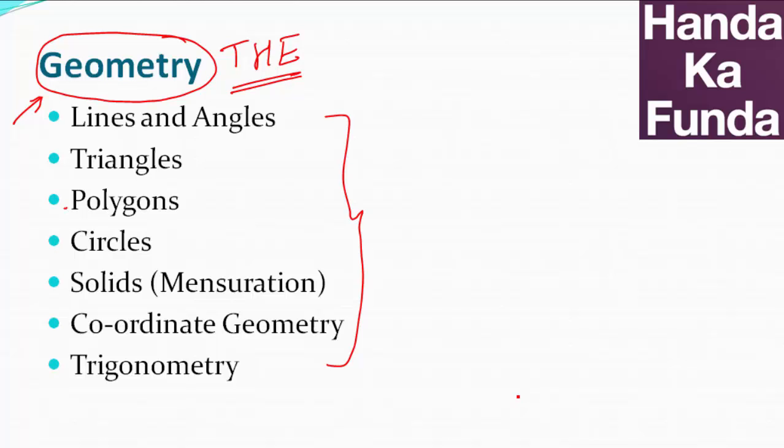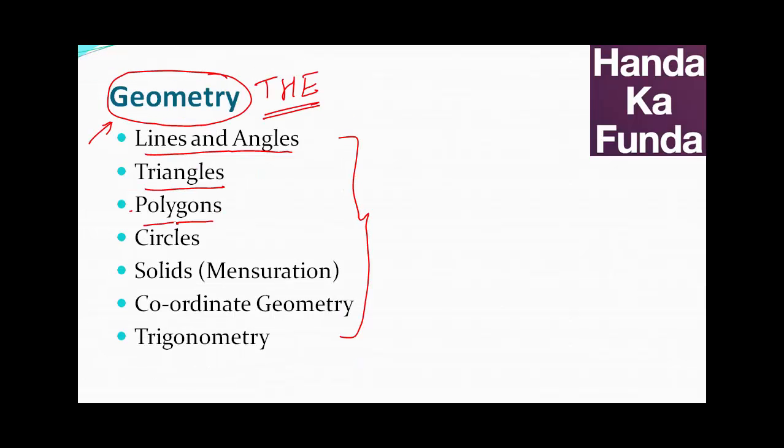So, first of all, what all does geometry consist of? To begin with, you need to understand the basic concepts of lines and angles, parallel lines, alternate angles and stuff like that. You move on to triangles, where there is something like similar triangles, congruency, area and stuff like that. Then we have polygons, rectangles, square, pentagon, hexagon is quite common.